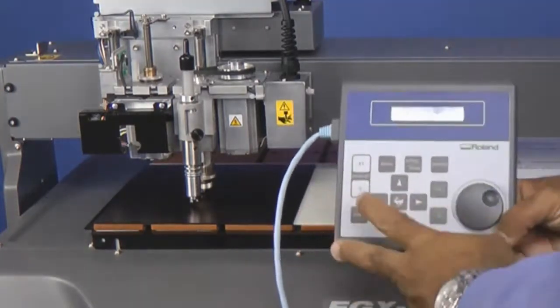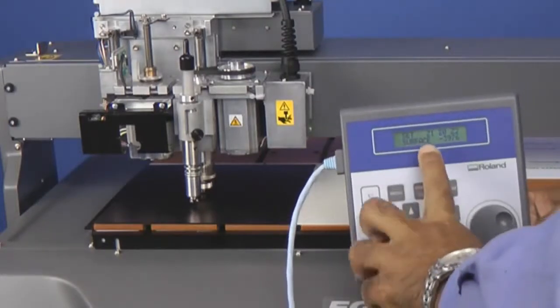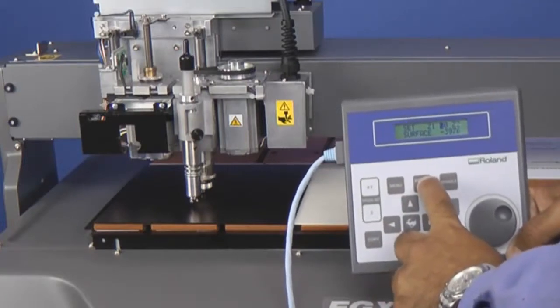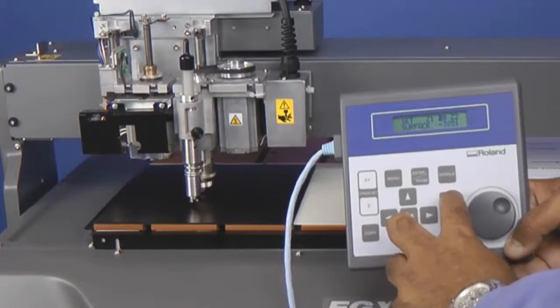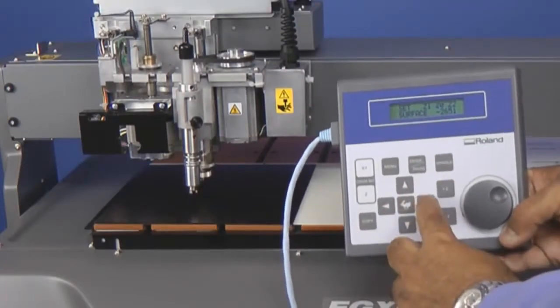Once it's compressed, we're going to press the Z Origin Set button. We want to make sure Z zero is highlighted, and press the Enter key to set that value.